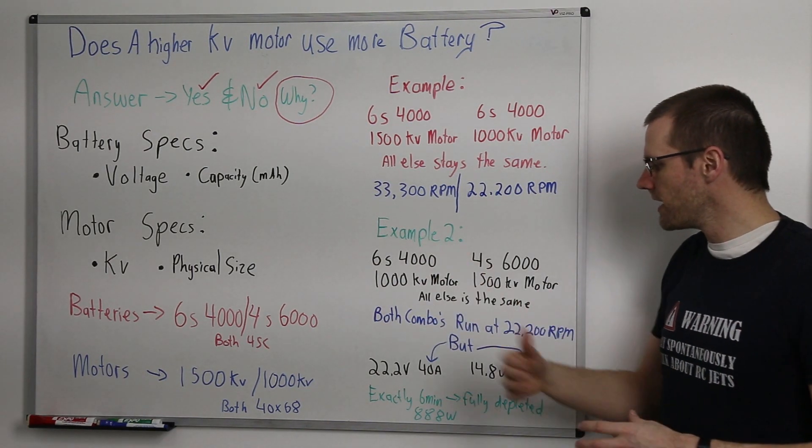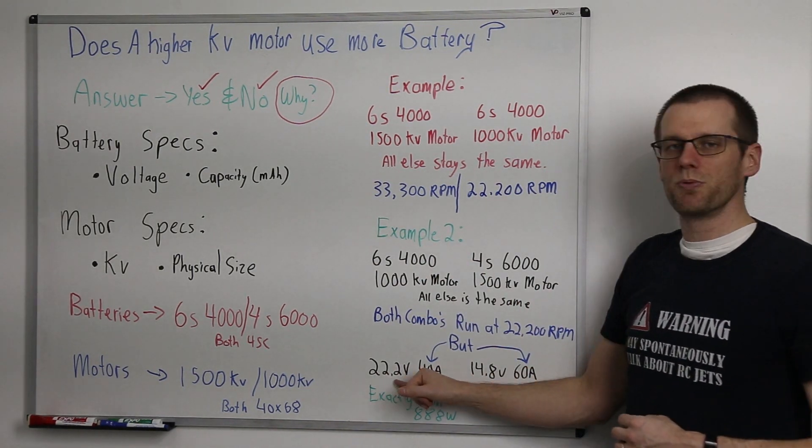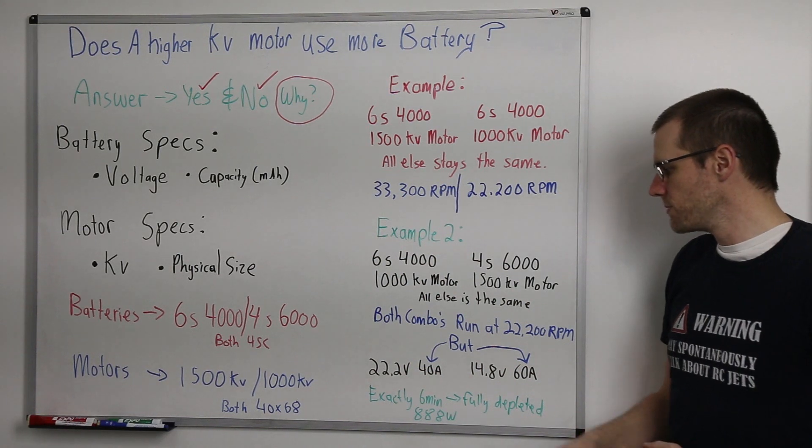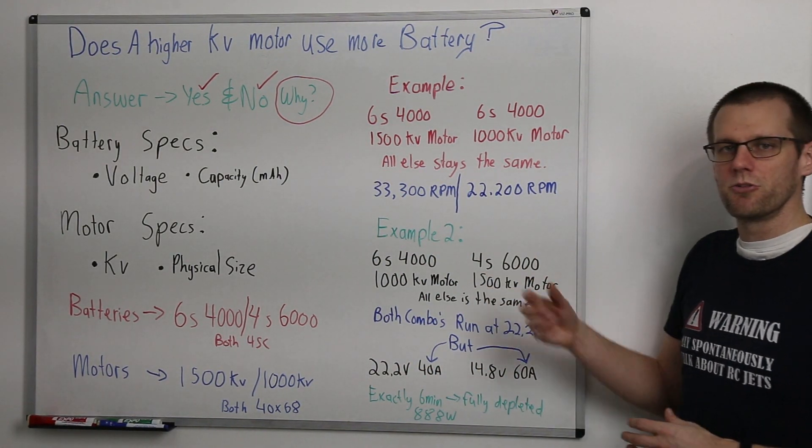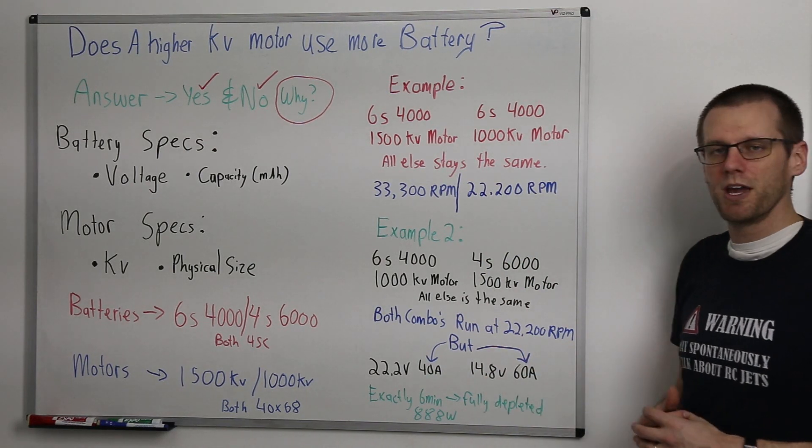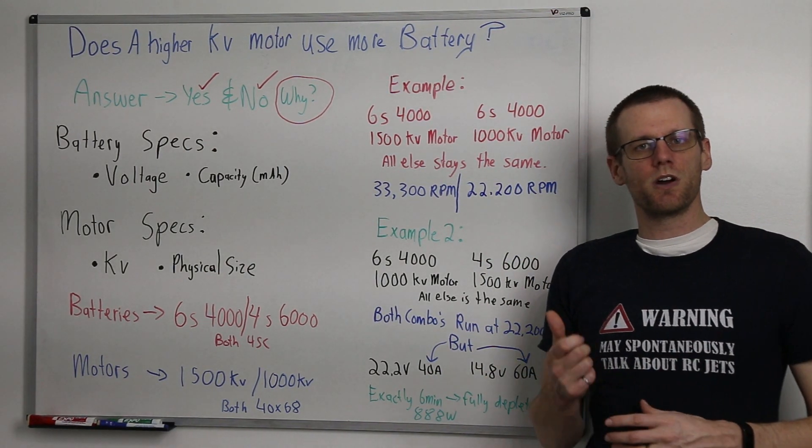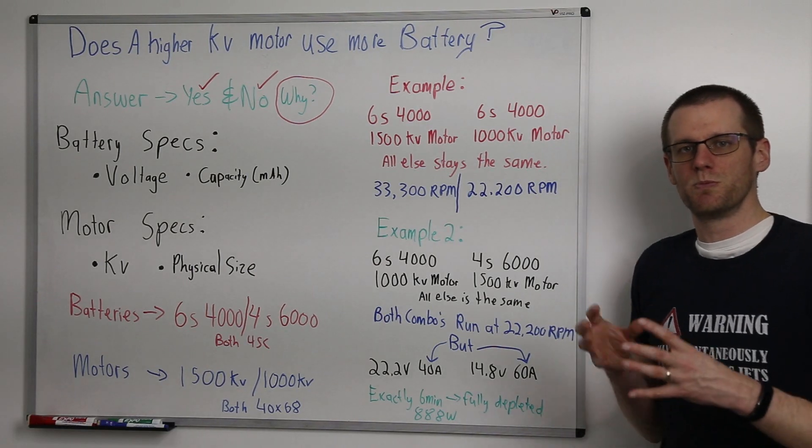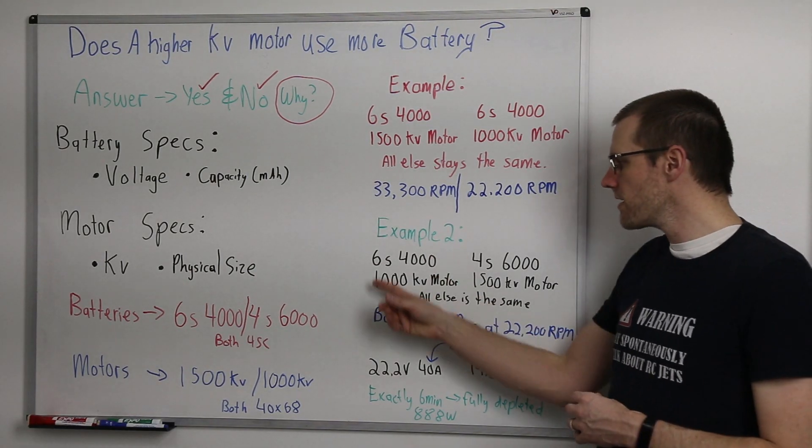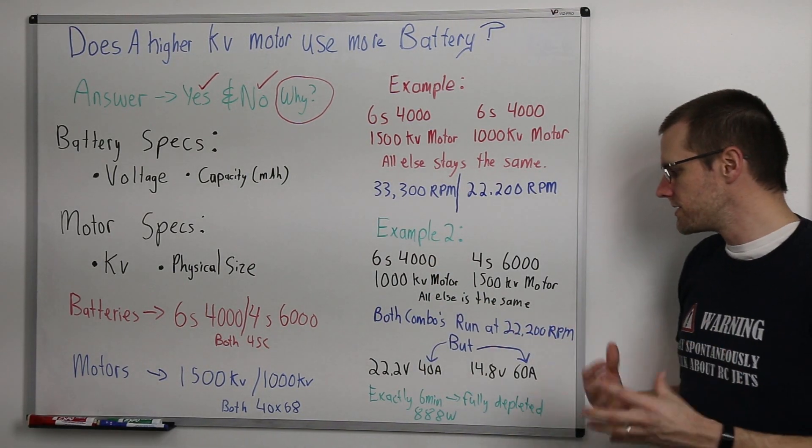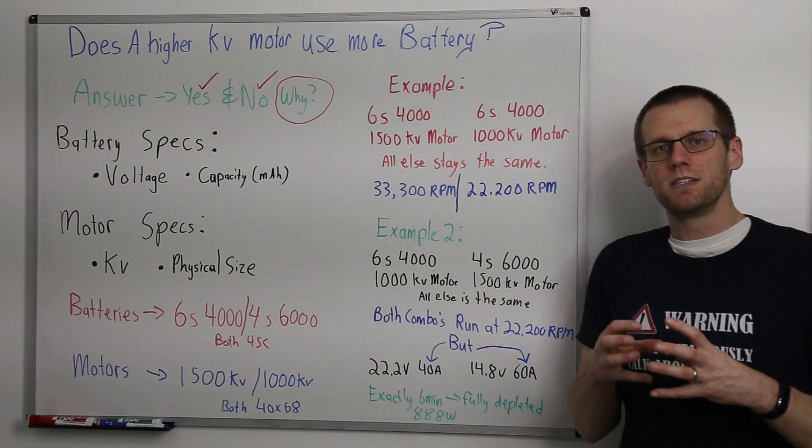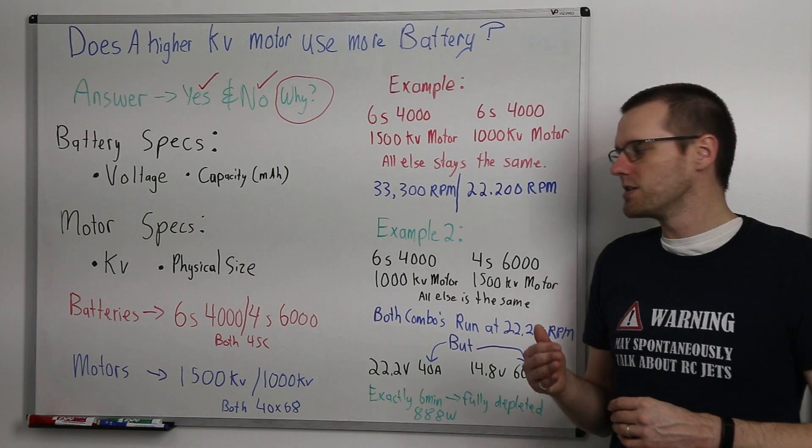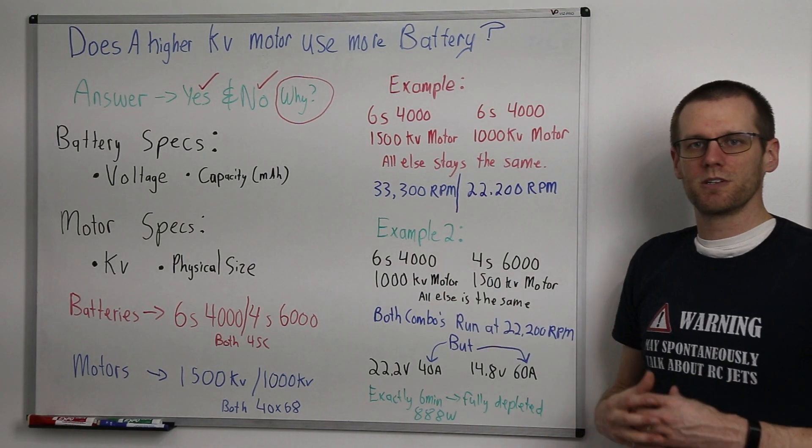The power system combination here on the left hand side is going to operate at 22.2 volts and it's going to produce about 40 amps. Whereas our combination here on the right hand side is going to be at 14.8 volts pulling 60 amps. Now if you were to start a timer at the moment that you spin up a propeller and operate it on this combination you would see that this would last under this power draw exactly six minutes and you would be fully depleted 4000 milliamp hour.